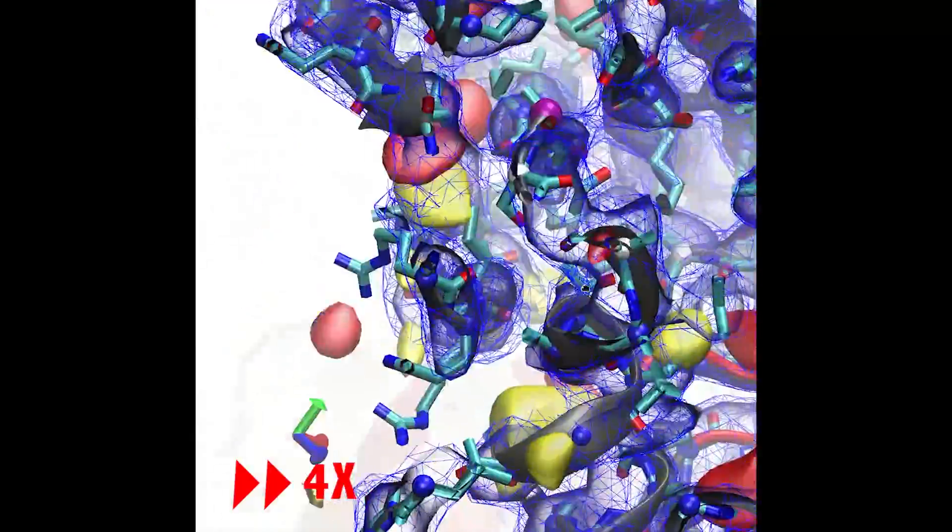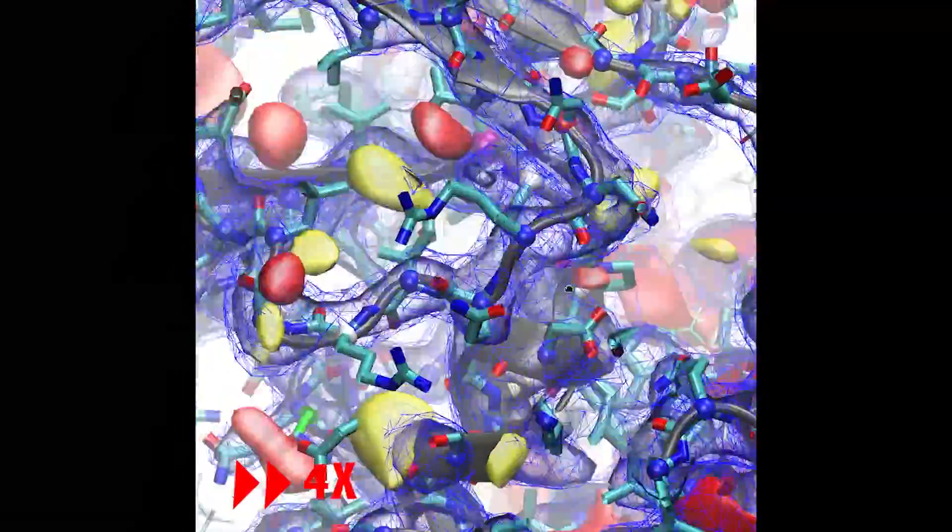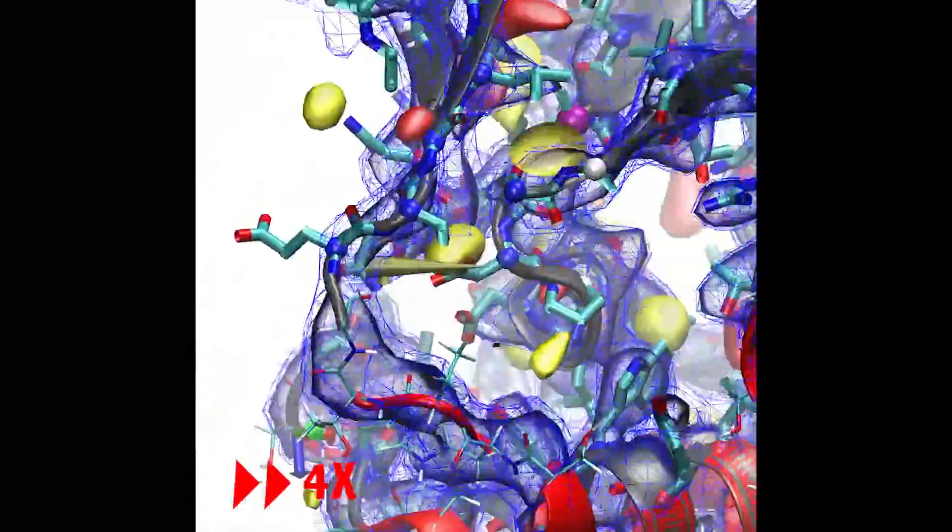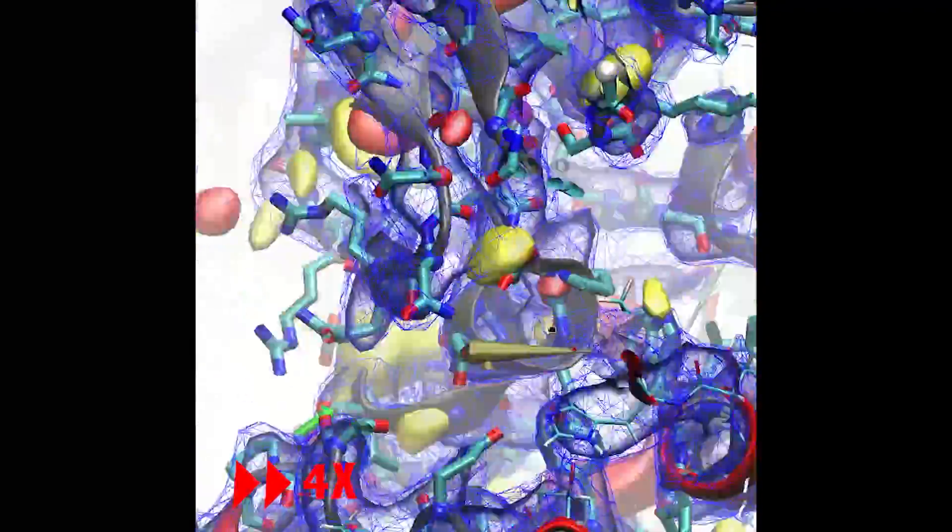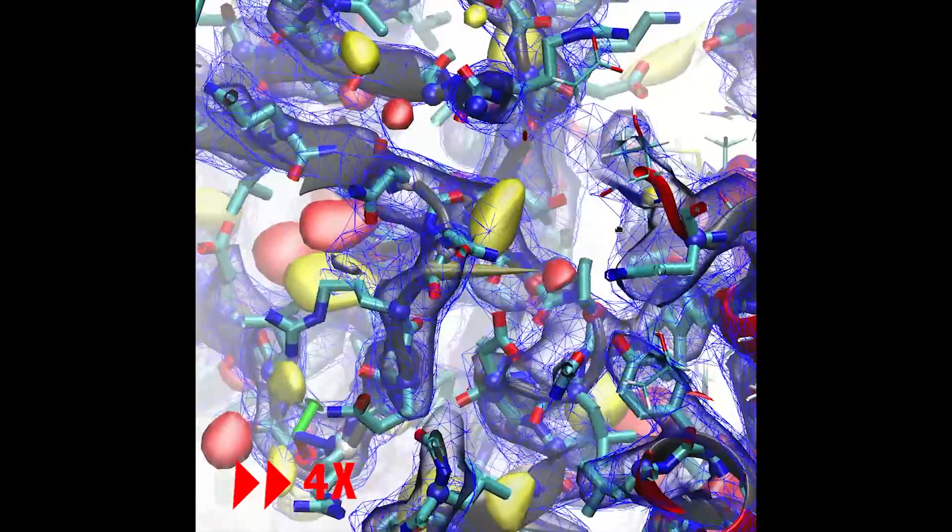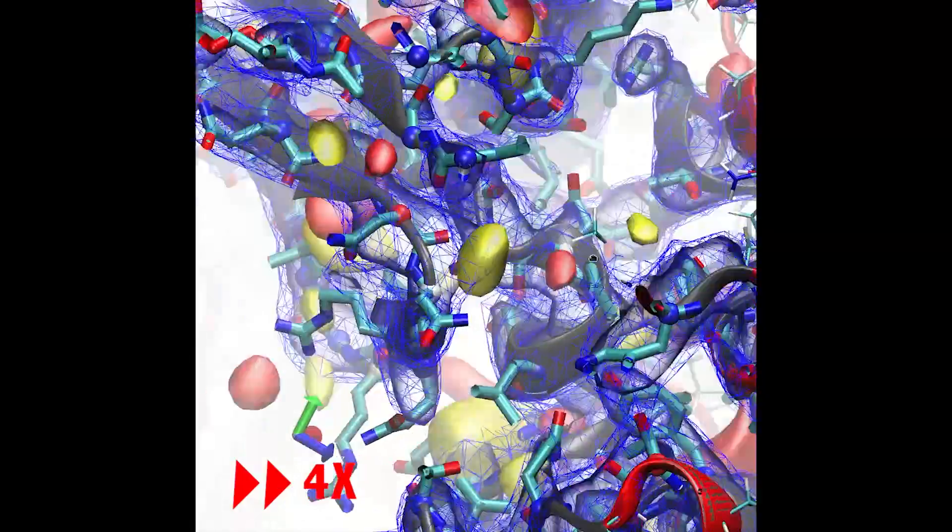You may have noticed the colours of C alpha atoms changing from blue to white to red. This is a real-time track of the Ramachandran status of each residue, with red being an outlier, white allowed and blue preferred. You can also see the secondary structure updating in real-time, which I find to be a very useful indicator of progress.